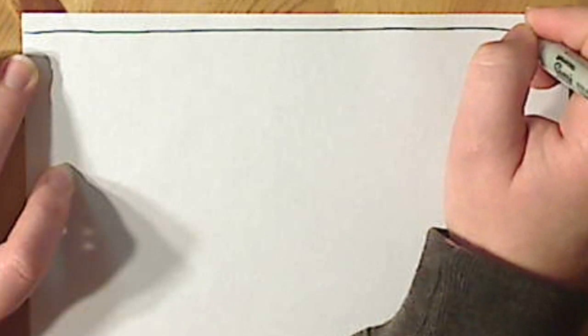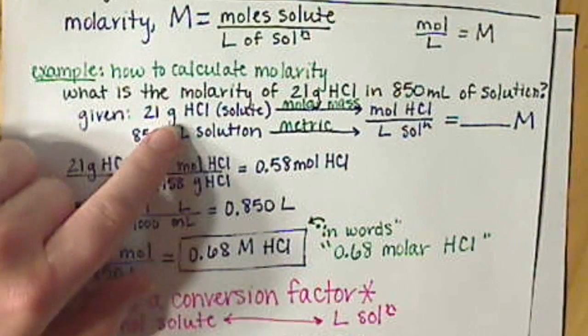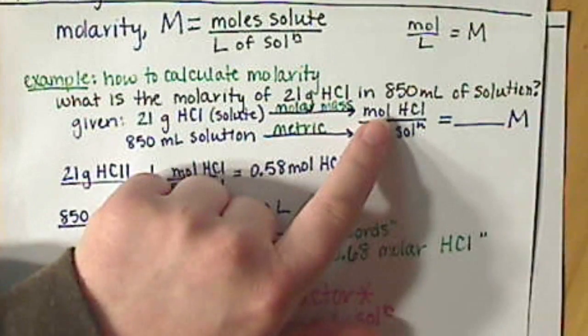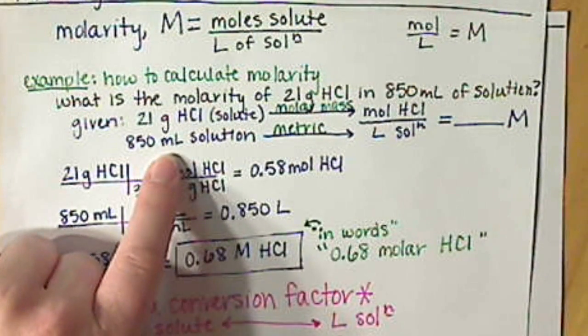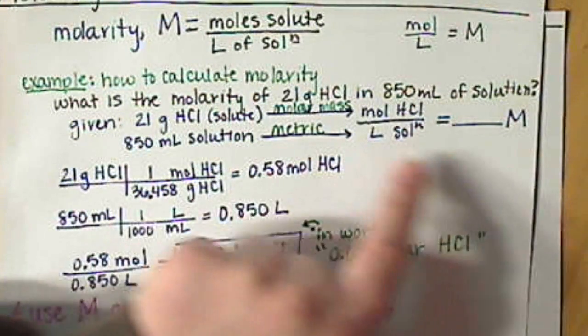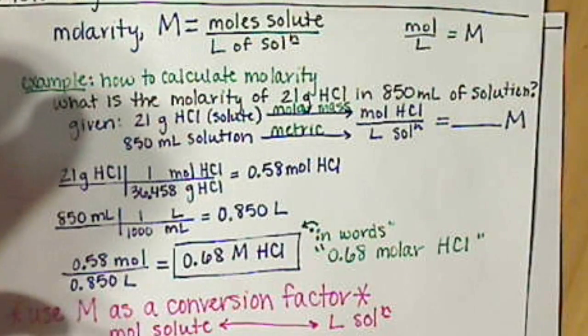In our previous video, we were introduced to the concept of molarity and learned two different ways of using molarity. The first way was to calculate the molarity. Usually you're going to get grams of your solute and have to convert to moles, get milliliters of your solution and have to convert to liters, then divide the two values to get to your molarity.